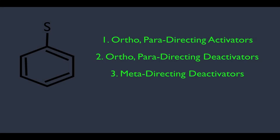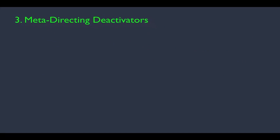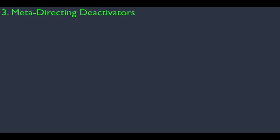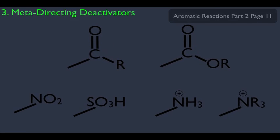In this online lecture, we're going to talk about the last type of substituent: the meta-directing deactivators. We're going to be doing the same analysis that we did on the first two to understand how and why these substituents behave the way they do. But first, let's look at the substituents that fall into this category. Here are some of the most important ones — I'll give you the full list a little bit later.